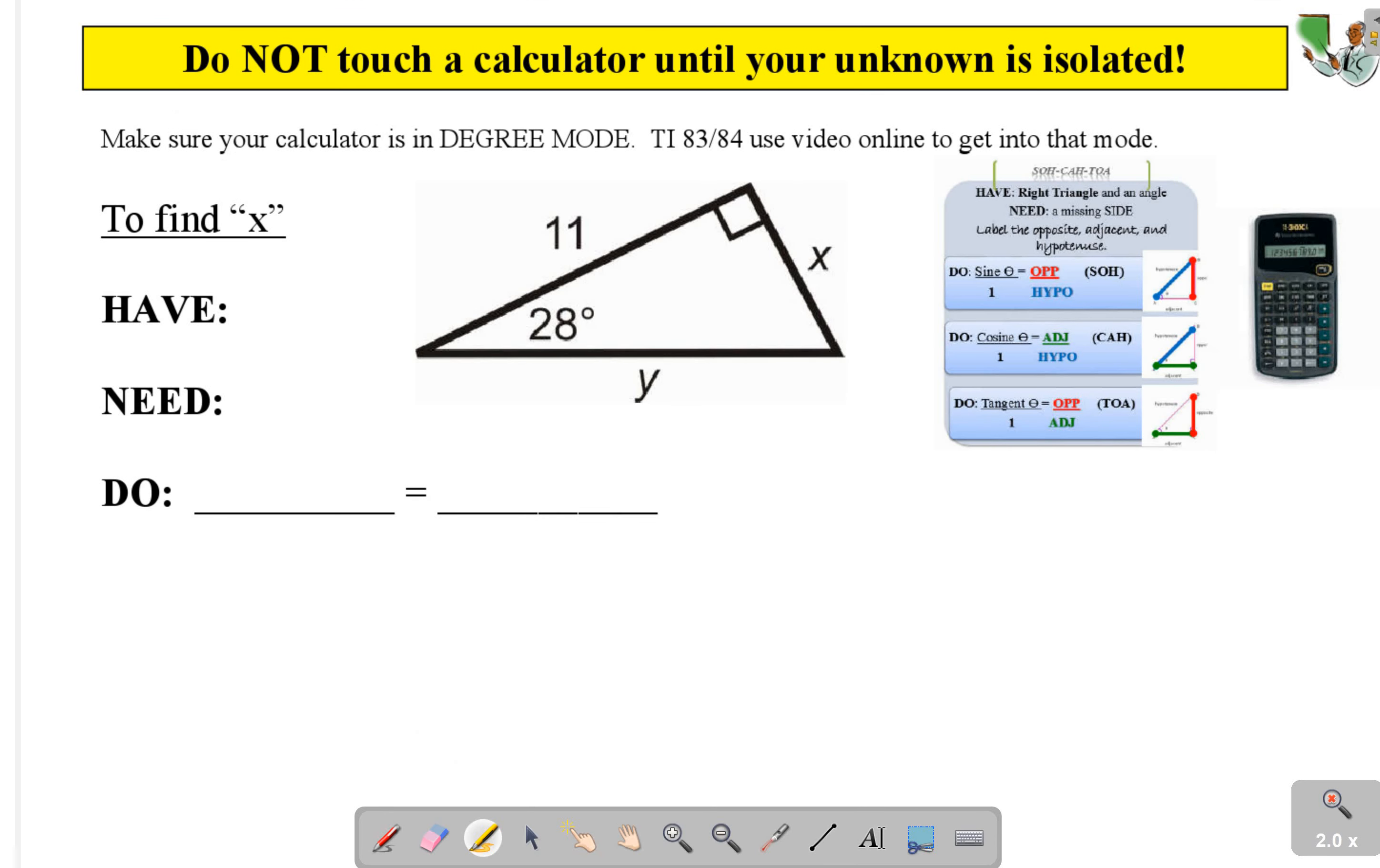We're going to solve for x. So right now I just like you to trace x. We're going to work with the theta of being 28. Label: this is opposite, adjacent, hypotenuse. Have, need, do.